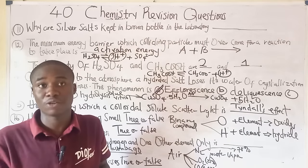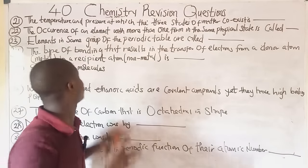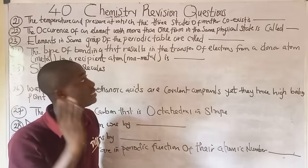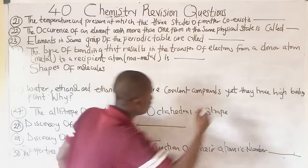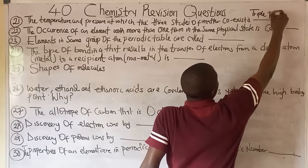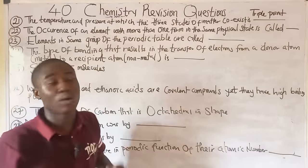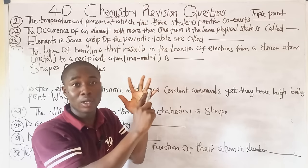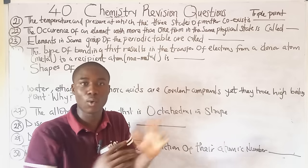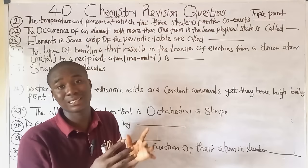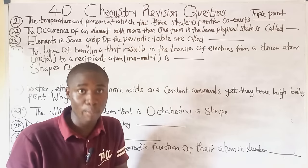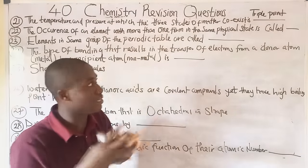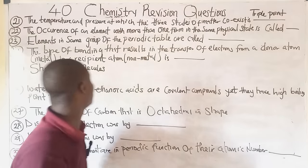Question twenty-one: the temperature and pressure at which the three states of matter coexist is called the triple point. The three major states of matter are solid, liquid, and gas. Solids undergo vibrational motion, liquids undergo translational motion, and gases undergo random motion.